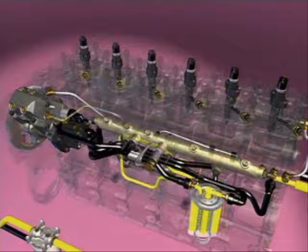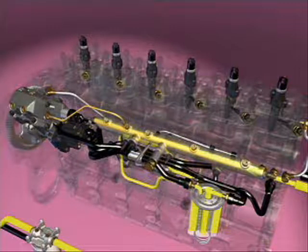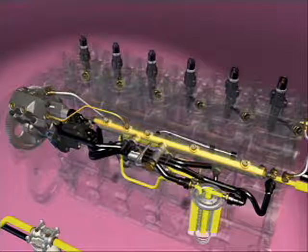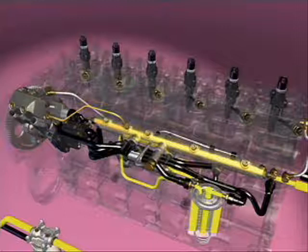The pressurized fuel leaves the high pressure pump and flows through piping to the fuel rail. This rail and the high pressure fuel line serve as an accumulator, storing the fuel under pressure until it is needed for injection.